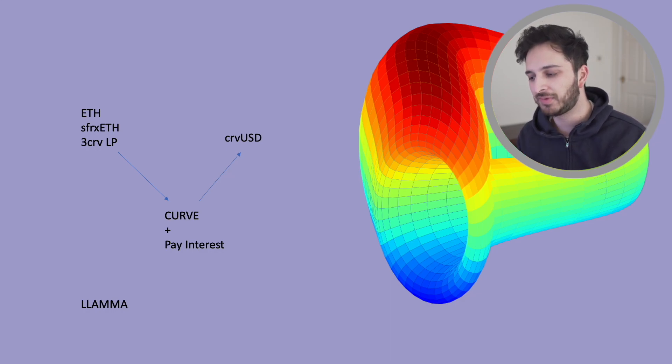So they have this mechanism called LAMA. And I'm not going to go into too much detail about it because some of it goes over my head as well. But essentially, this is a stable coin which is backed by ETH. But it doesn't have to be just ETH. It can be a variety of other collateral.